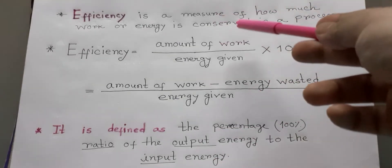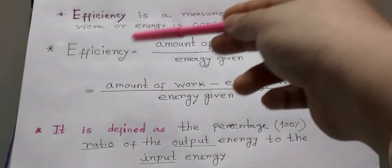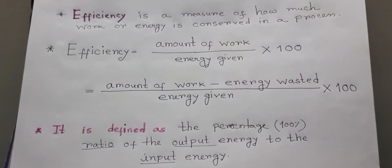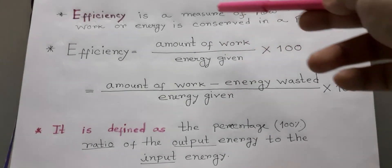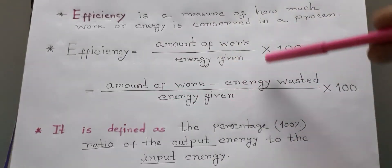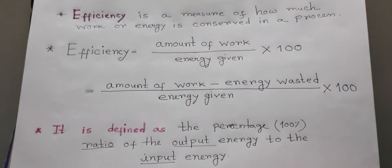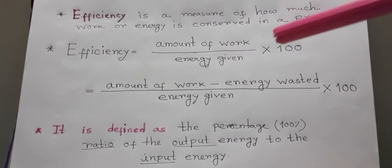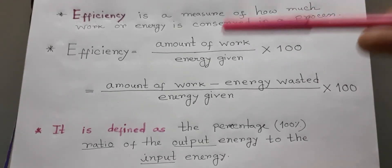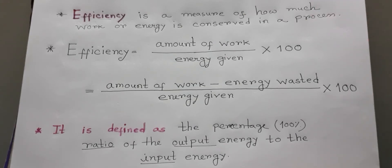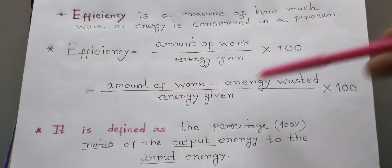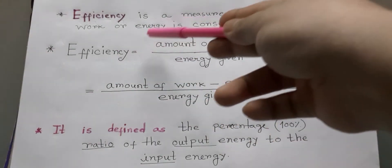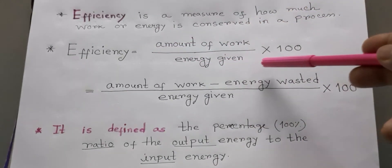This formula is very important for examination and also for mathematical analysis. Mathematical problems come from this equation. We use various types of machines and engines in our day-to-day lives. Energy is wasted due to friction or some other causes, so we have to measure how efficiently a machine works — and for that we use this formula: efficiency equals amount of work divided by energy into 100.